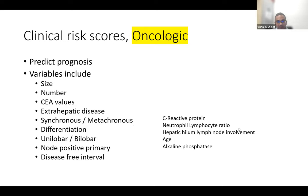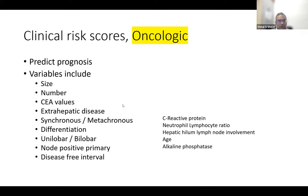In the treatment plan, prognostication is very important. If there are poor prognosticators, management should be tailored to consider systemic therapeutic options. There are more than 10–15 clinical risk scores, most revolving around number and size of lesions, CEA value, extra-hepatic disease, differentiation, and disease-free interval.